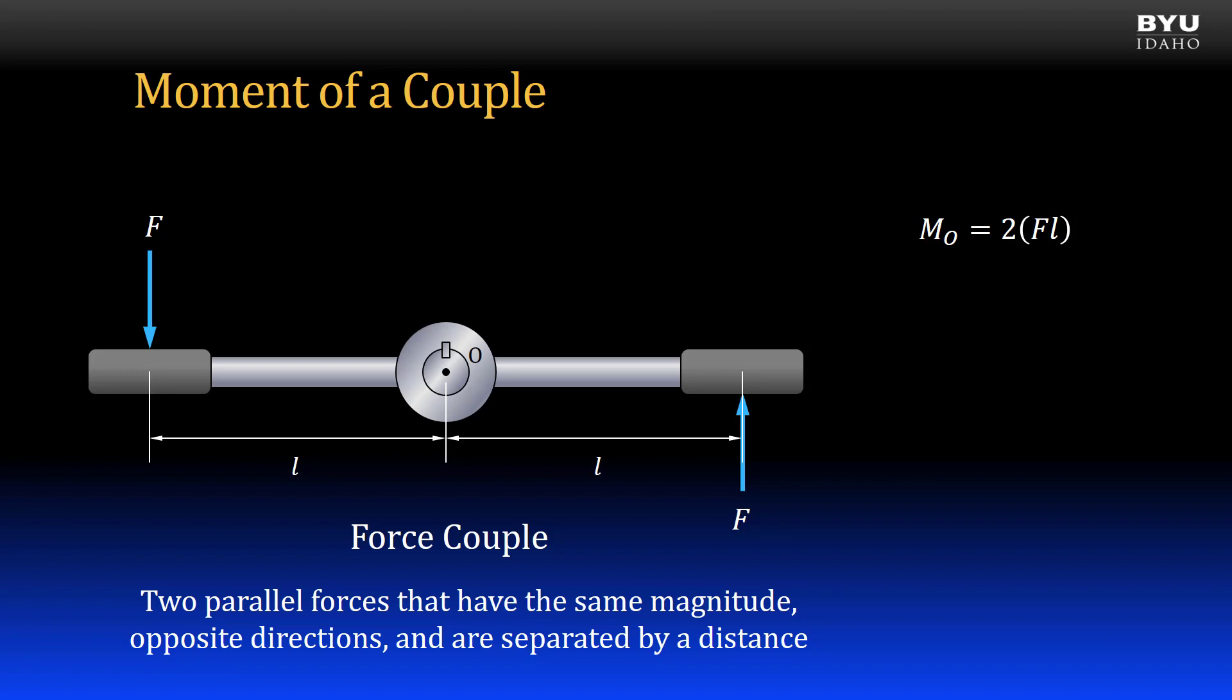If I define the perpendicular separation distance between my two forces as D equal to 2 times L, then the applied moment about point O can be calculated as the product of one of the forces times the perpendicular separation distance D.